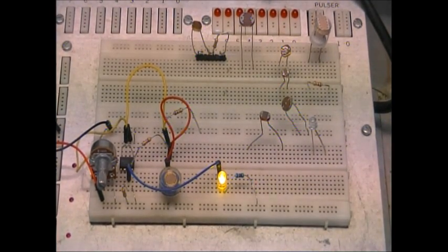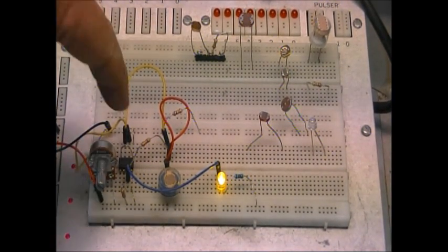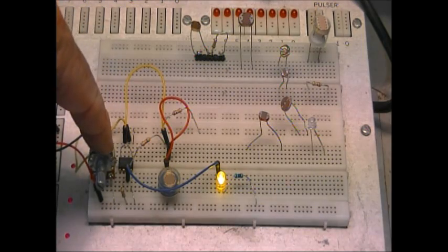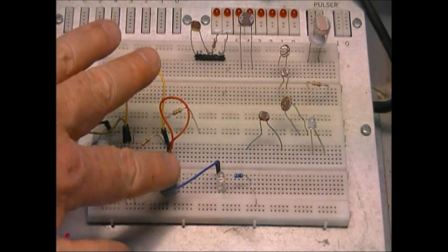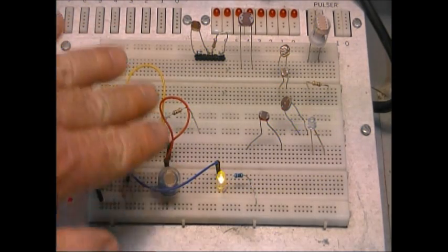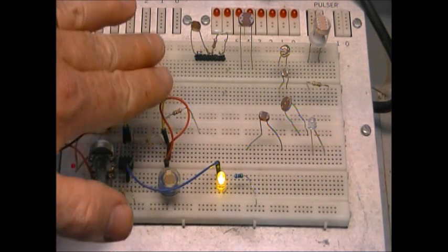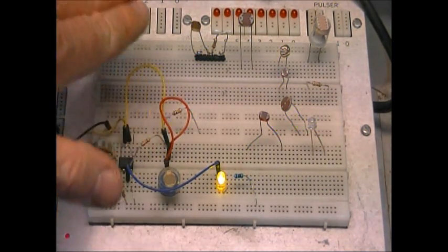You just saw an LED come on. This is a comparator circuit. One input has a voltage divider with this photocell. As you notice, I can put my hand over it and block the light, and it goes off.